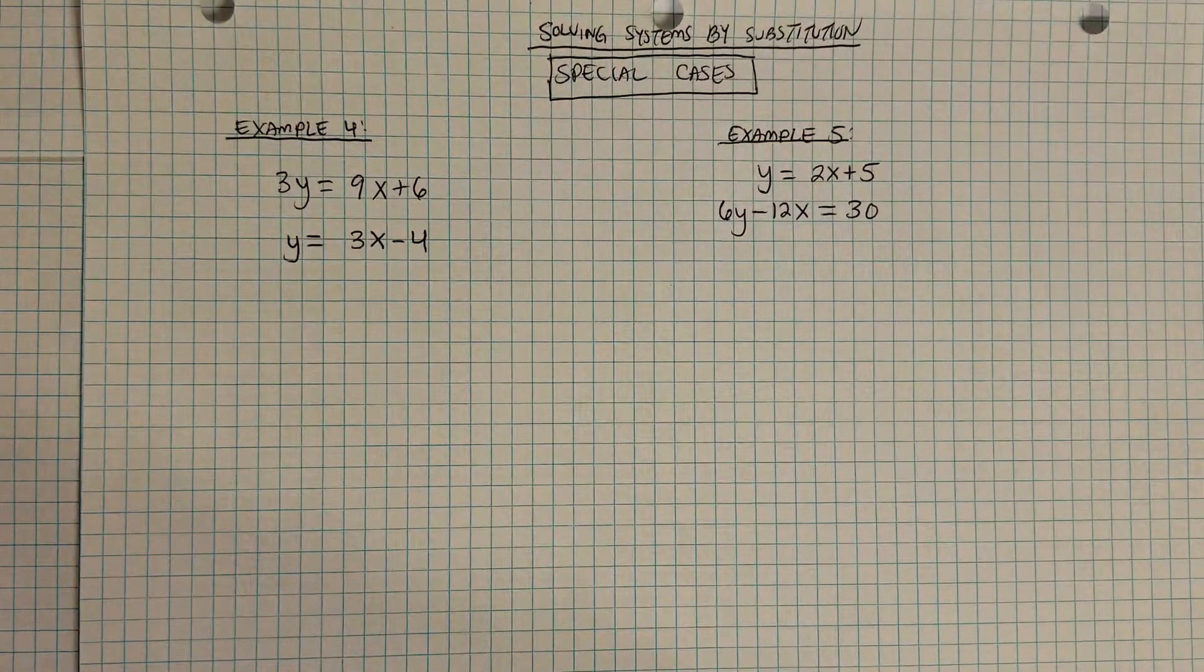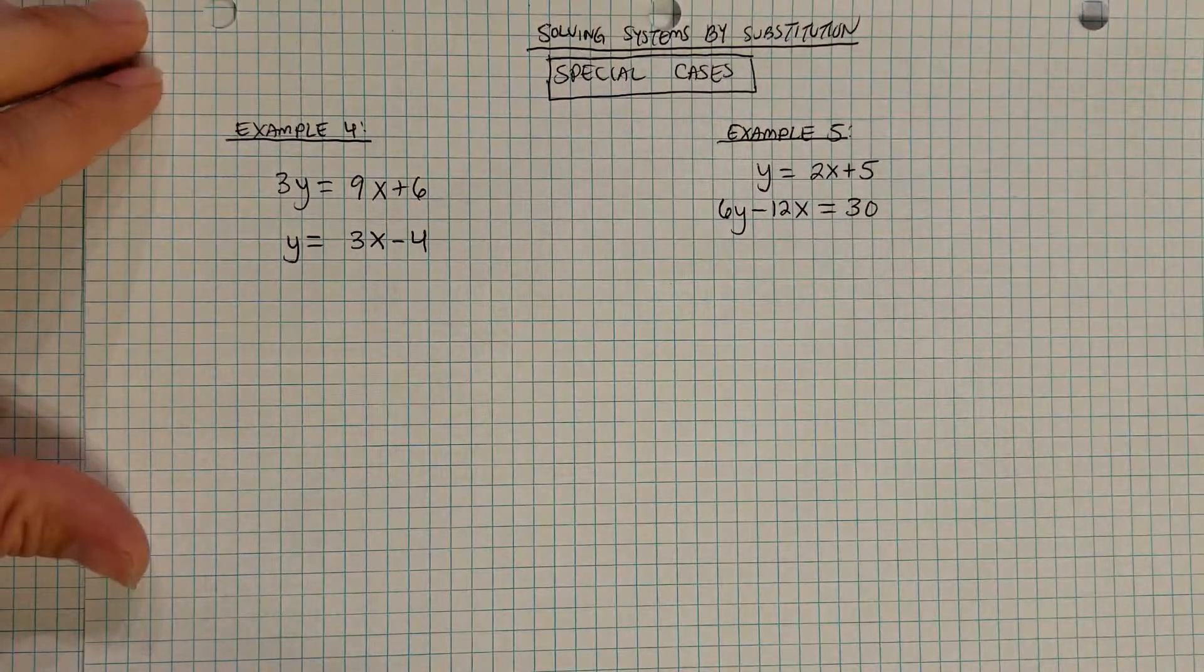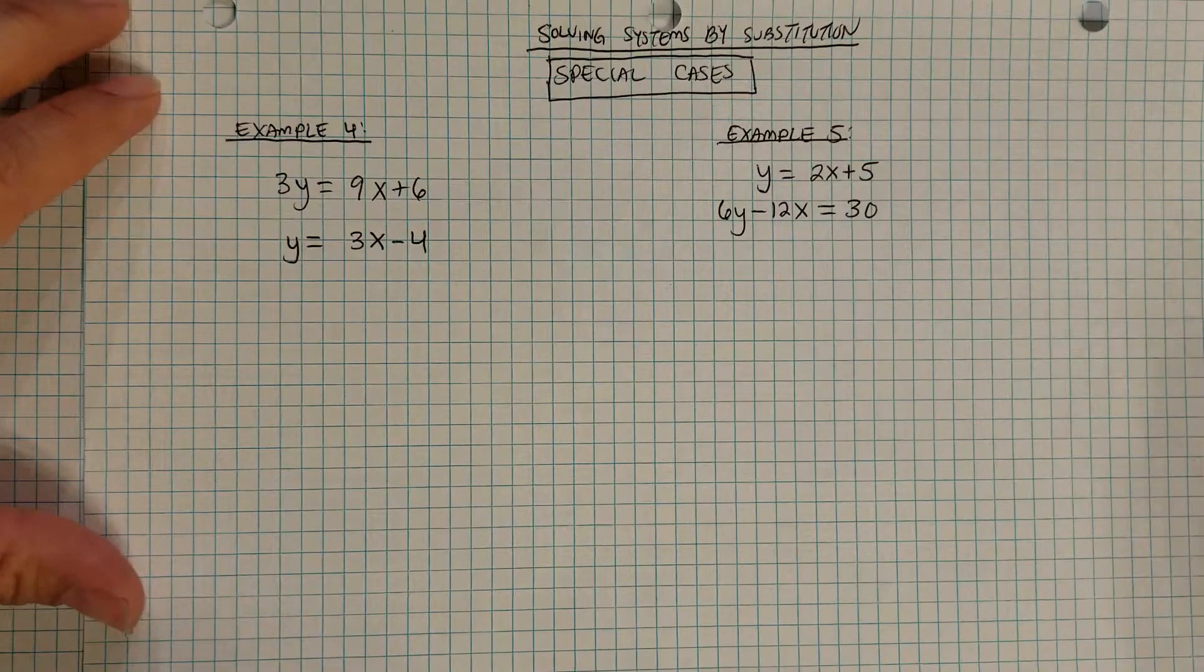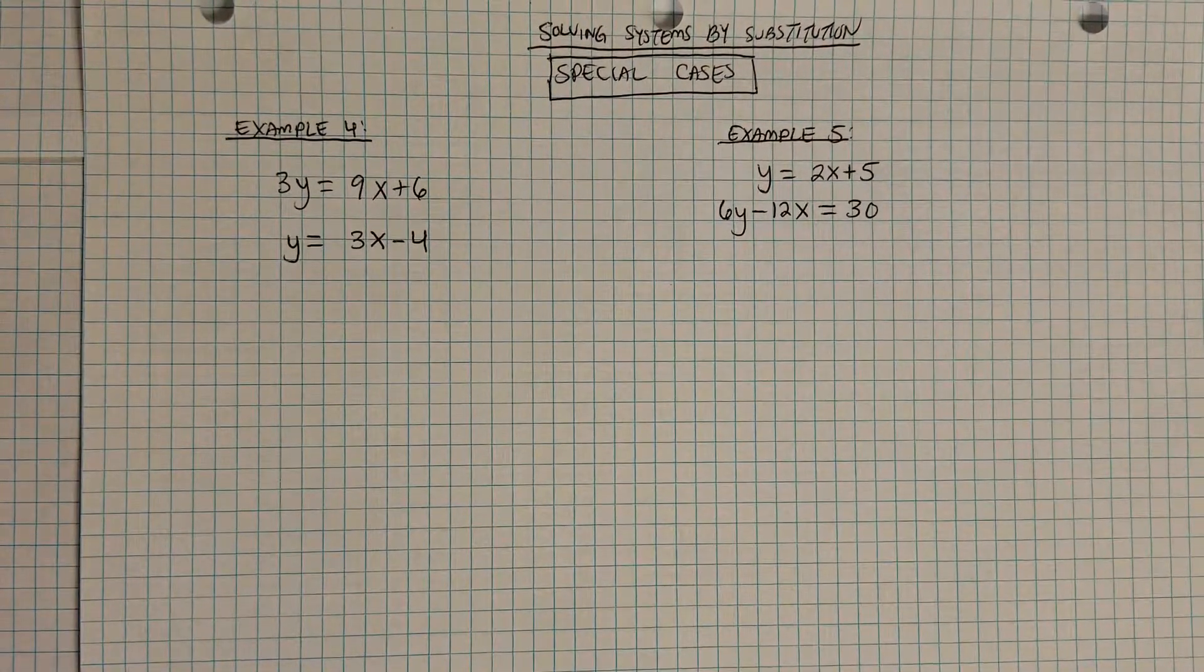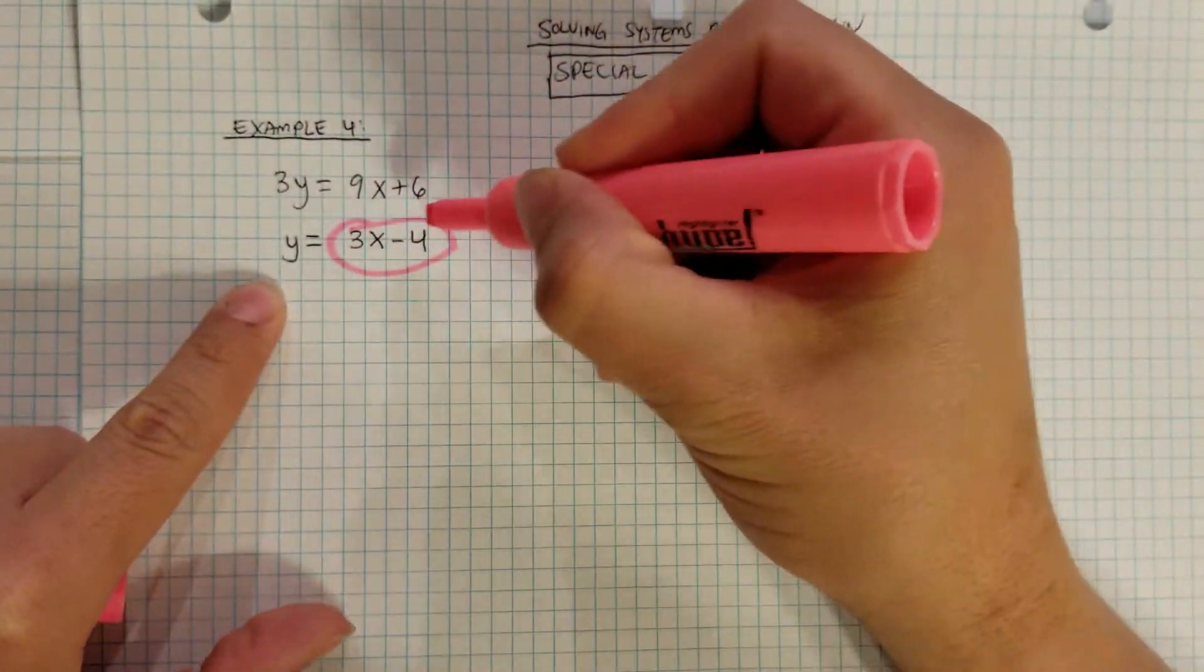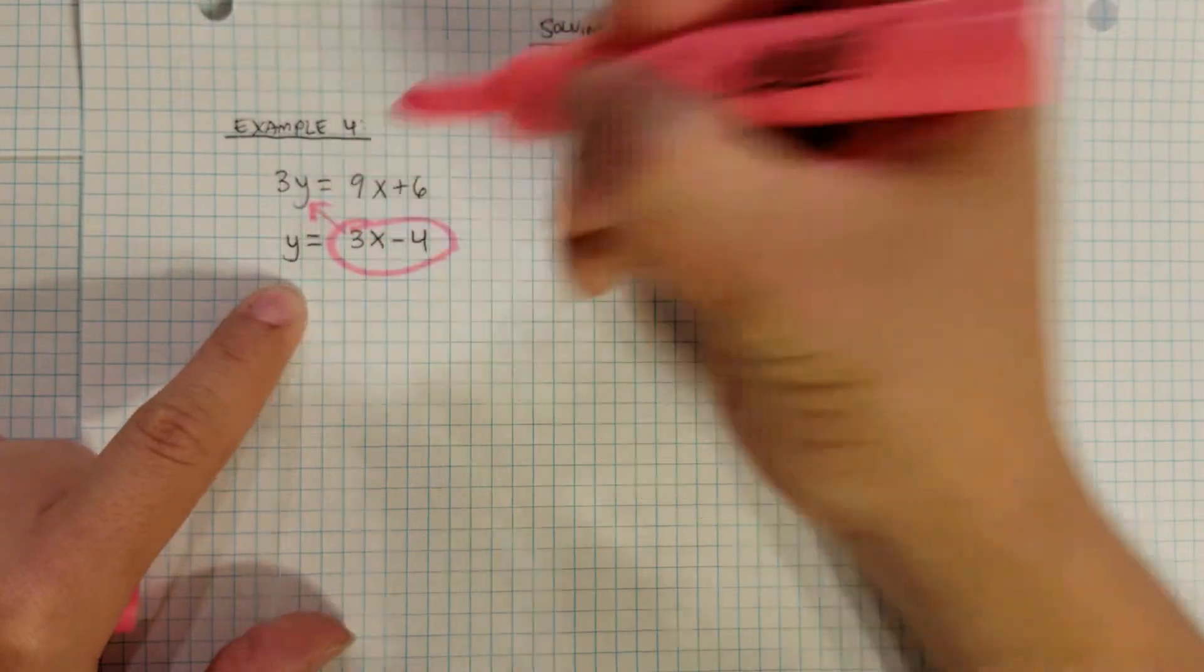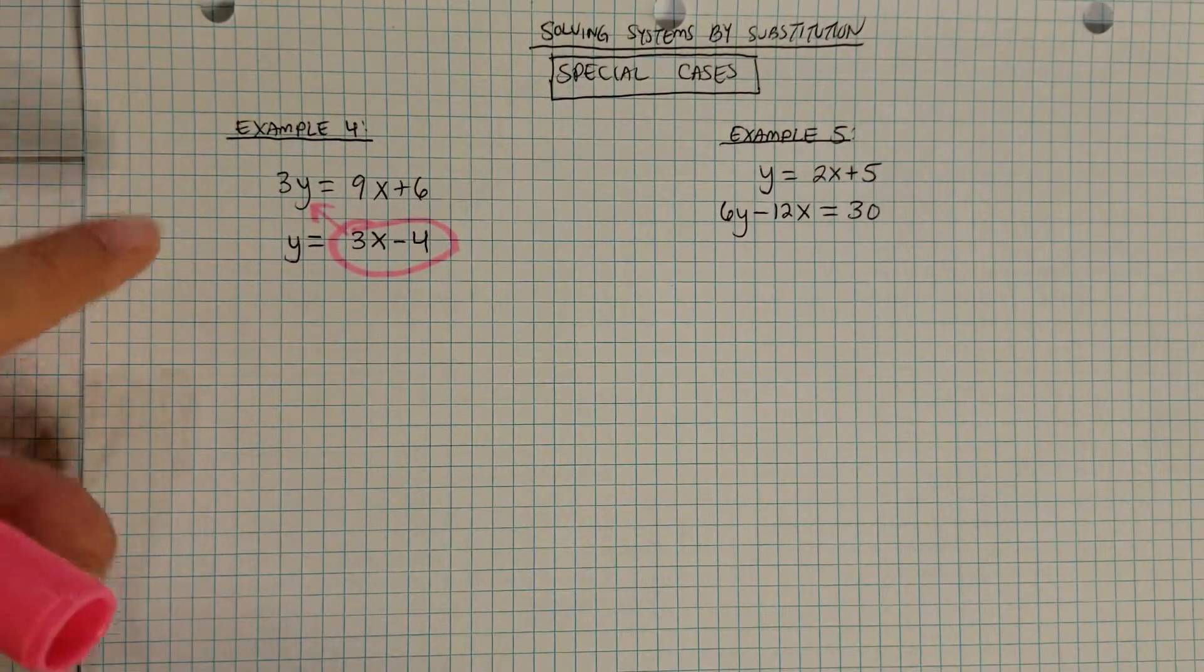So there are a few special cases when using substitution to solve systems of equations. If you remember from my last video on solving systems of equations with substitution, you could always use substitution if you have one of the variables already solved for and plug that into the other equation to be able to solve for the other variable. So you have one equation, one variable.